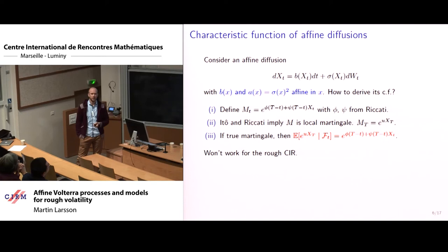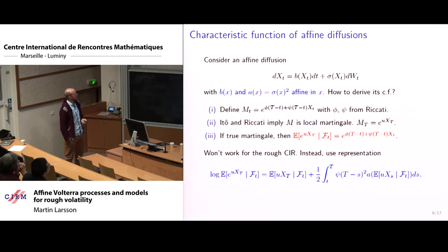And because of the way you chose the boundary conditions of phi and c, M capital T is equal to e to the ux capital T. So now this M is not only a local martingale, but really a martingale. Then you get this, right? Which is what you want. So this is how it works in the standard situation. But of course, this is not at all going to work for the rough CIR process, because the right hand side here is certainly not going to be a martingale if x is a rough CIR process, because it's not even going to be a semi-martingale.